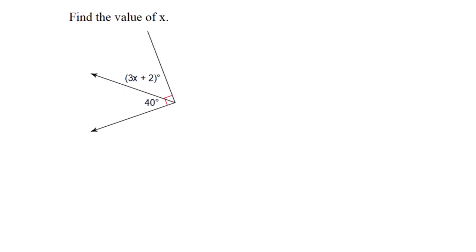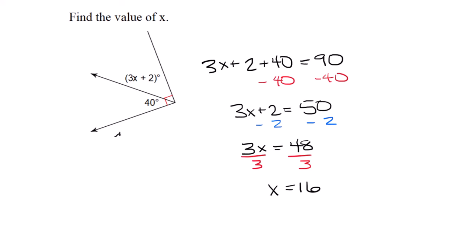This is about complementary angles. The little red square means they add up to 90 degrees. So 3x plus 2 plus 40 equals 90, solve the algebra, x equals 16. Check your answer: 3 times 16 plus 2 equals 50, and 50 plus 40 equals 90.